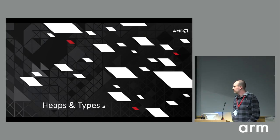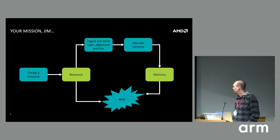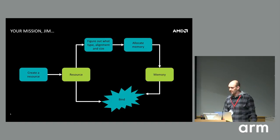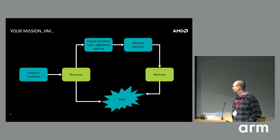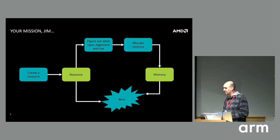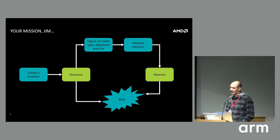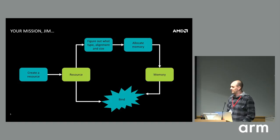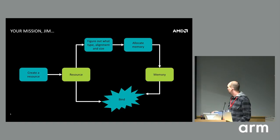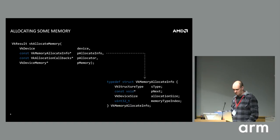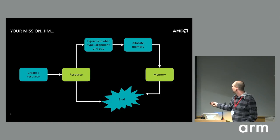Let's get started with heaps and types. If you've done any Vulkan coding, this flow will be probably quite familiar to you. You start by creating a resource or describing the resource you're going to create. You create that resource, then figure out what type of memory you want, the alignment, and the size. You allocate that memory and then bind the two things together — the resource description and the memory that backs it.